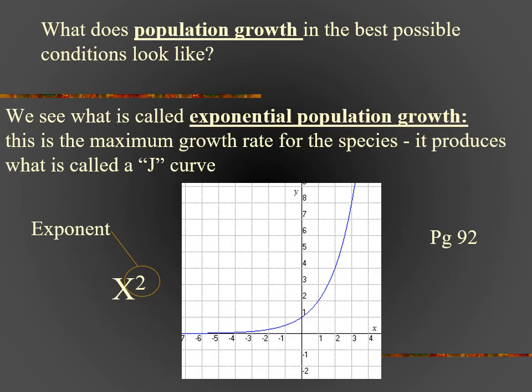So what does population growth look like for any species under the absolute ideal circumstances, under the best possible conditions? Well, this produces what we call exponential growth. We call it exponential growth in reference to the mathematical concept of an exponent, and it produces this curve which we call the J-curve — it looks like a J. This curve means that the growth of the population is more than doubling nearly every time in most cases.